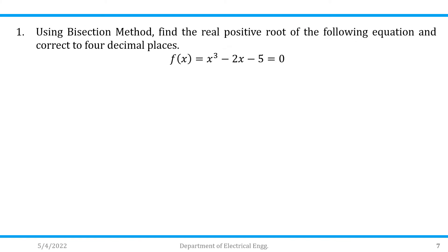Let us solve the first problem. Using the bisection method, find the real and positive root of the equation f(x) = x³ − 2x − 5, correct up to 4 decimal places.